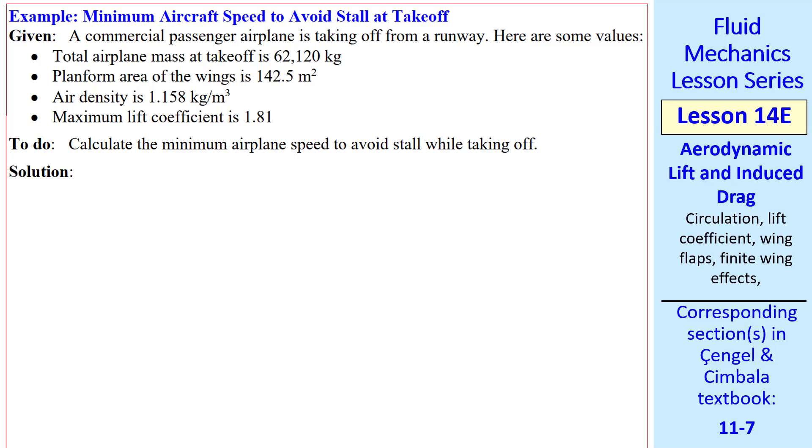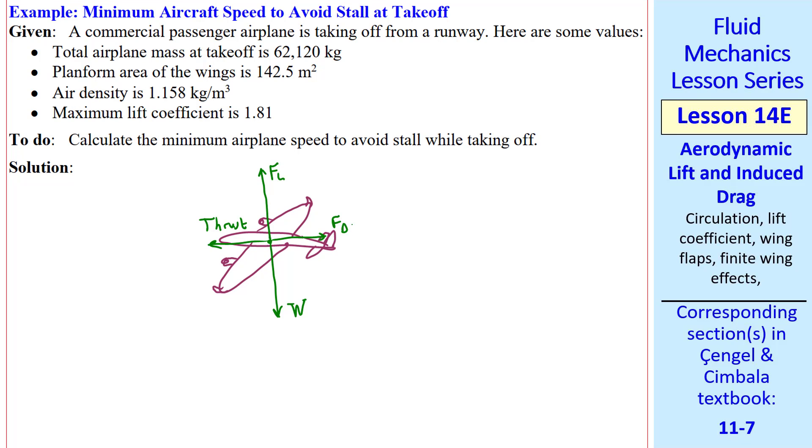Finally, I'll do an example problem. Suppose we have a commercial passenger airplane taking off. We give the total mass, the total planform area of the wings, the air density, and the maximum lift coefficient. We're to calculate the minimum airplane speed to avoid stall while taking off. First, we draw a free body diagram where there's a lift force and a weight, a thrust, and a drag force. At constant cruising speed, sigma f is zero. Therefore, the lift force has to balance the weight and the thrust has to balance the drag.